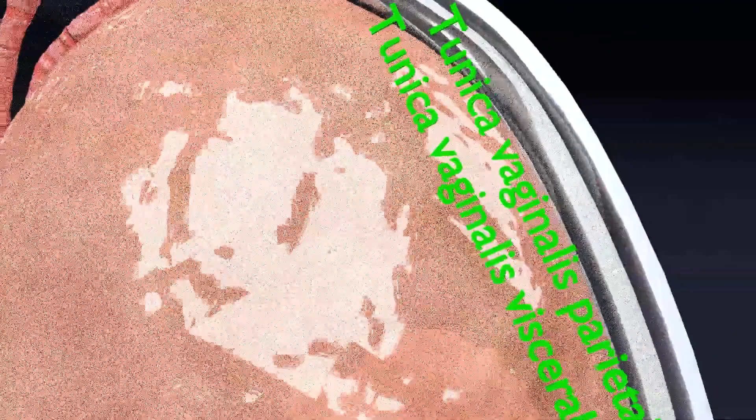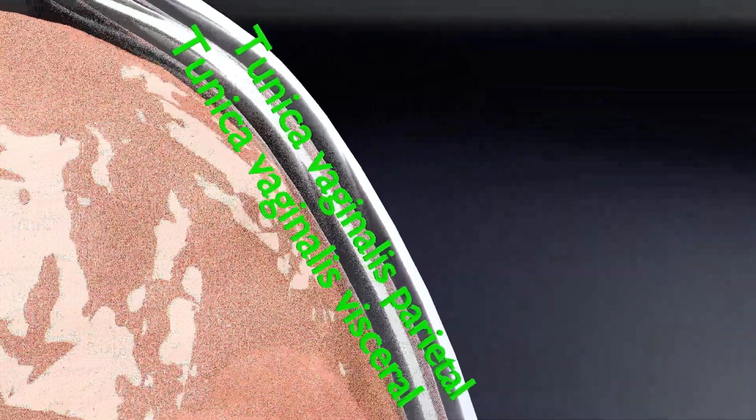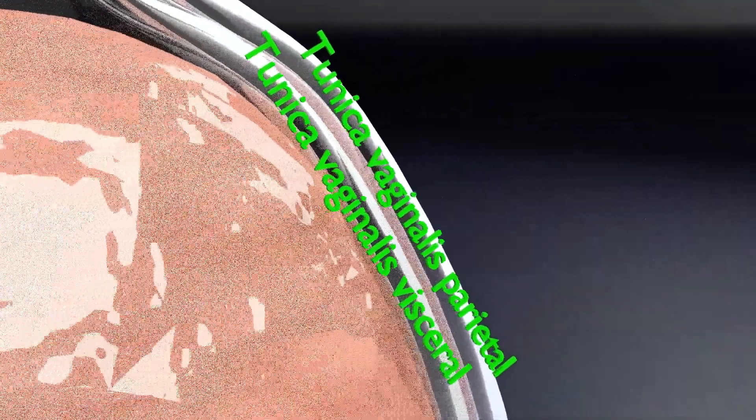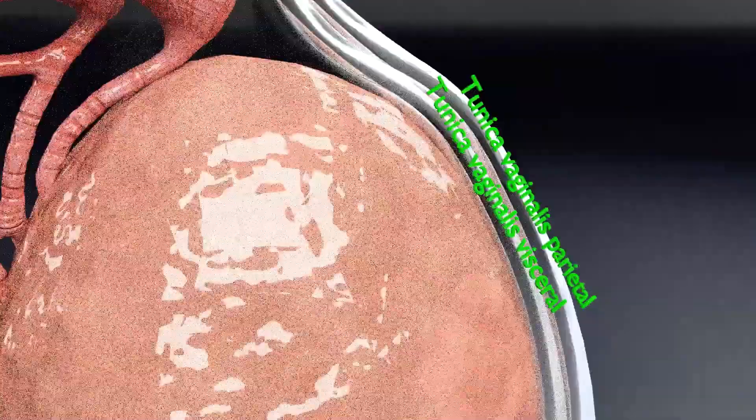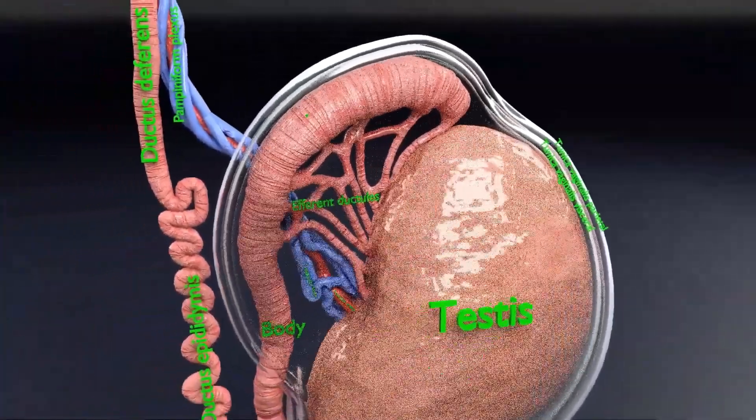Now you are able to see the tunica vaginalis parietal and inner to it you can see tunica vaginalis visceral. These both are parts of tunica vaginalis. The tunica vaginalis represents lower persistent portion of processus vaginalis.